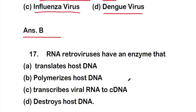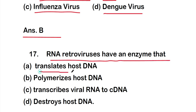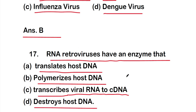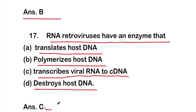Question 17: RNA retroviruses have an enzyme that — option A: translates host DNA, option B: polymerizes host DNA, option C: transcribes viral RNA to cDNA, or option D: destroys host DNA. The right answer is option C — they transcribe viral RNA to complementary DNA, or cDNA.